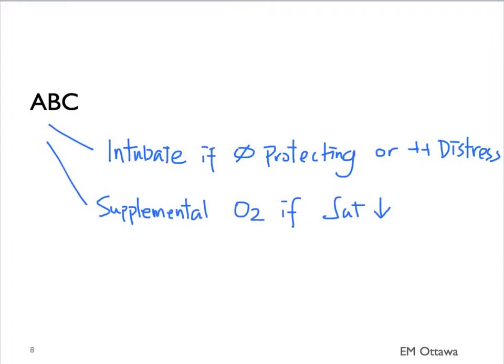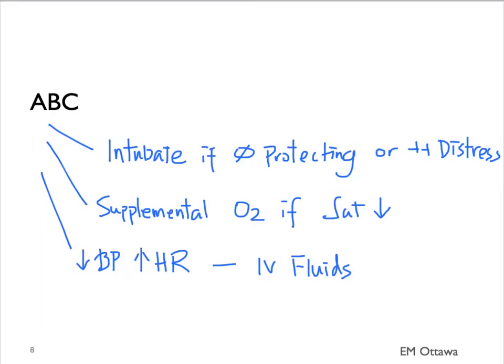What about for circulation? If the patient is hypotensive or tachycardic, we need to give them IV fluids. Crystalloids such as normal saline and Ringer's lactate are both good choices. Once the patient is more stabilized, we can move on to more specific therapy — in this case, antibiotics.